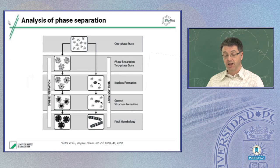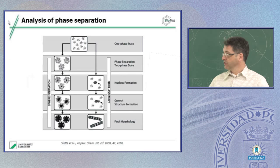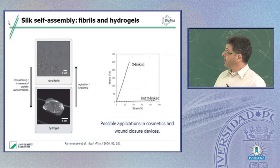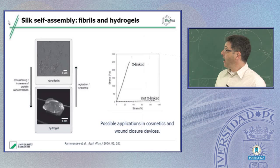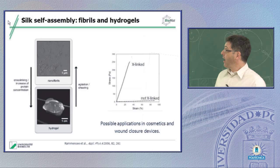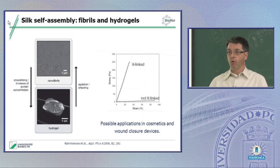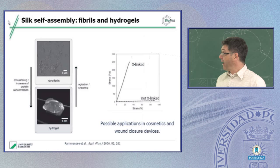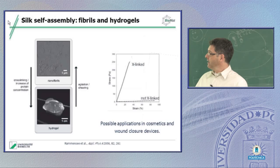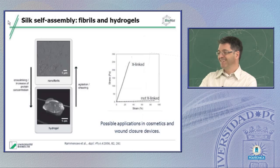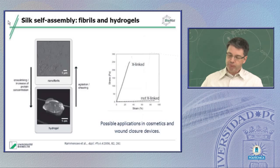Talking about these nanofibrils, they're quite interesting because if you increase the concentration, what happens is that these nanofibrils form what we call hydrogels. You know hydrogels from daily uses in creams, soaps, and whatsoever. Hydrogels have a high potential for biomedical applications. If you think about wound closure devices, sometimes you can get hydrogels that you bring as a paste into the wound and it closes the wound quite rapidly. Because you can also incorporate drugs and other stuff into such hydrogels, we see a high potential in using these hydrogels for applications.